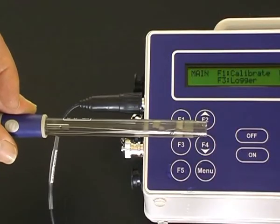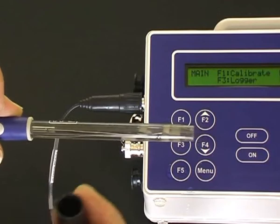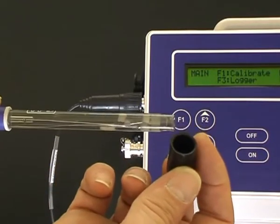To store the pH sensor, just replace the wetting cap back on the end with a bit of tap water in it.